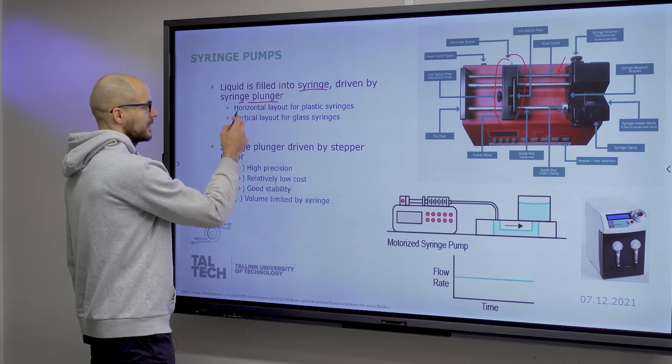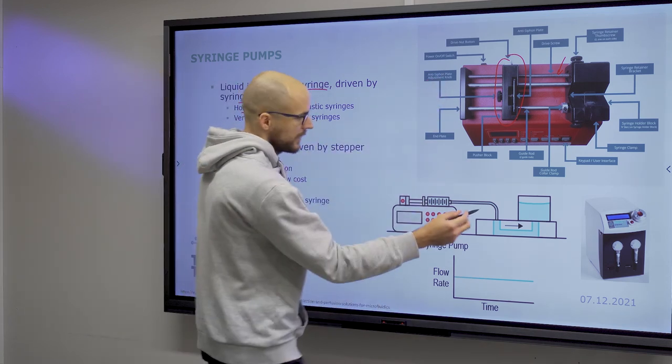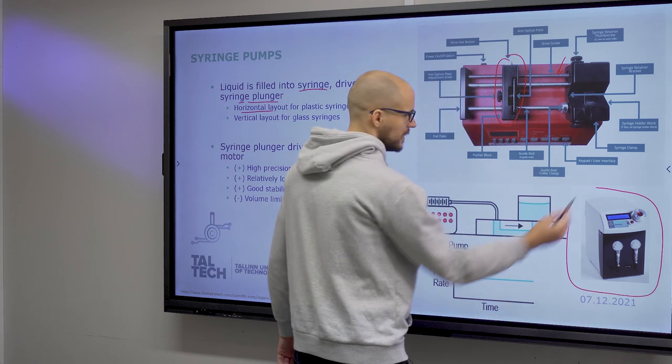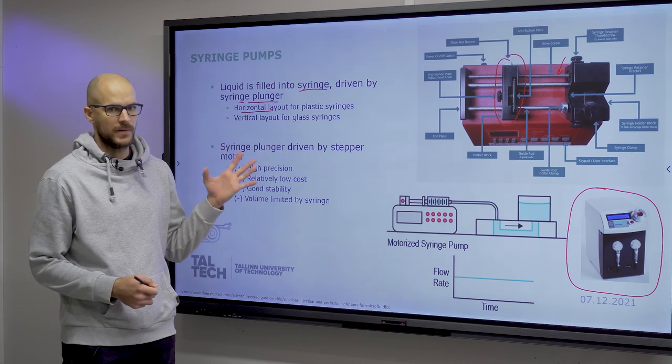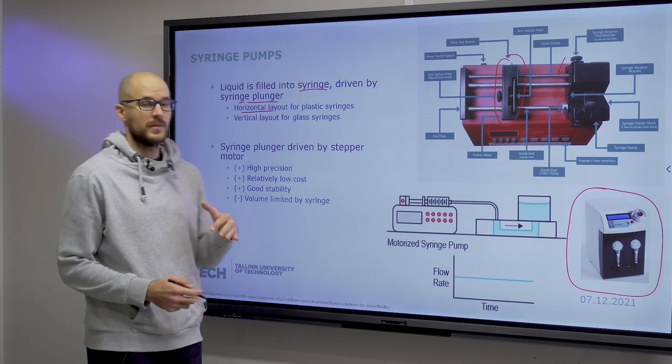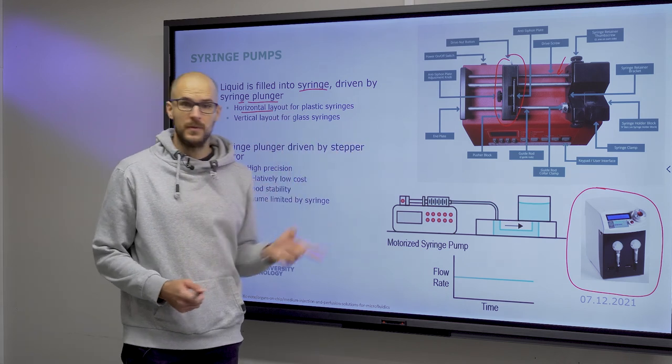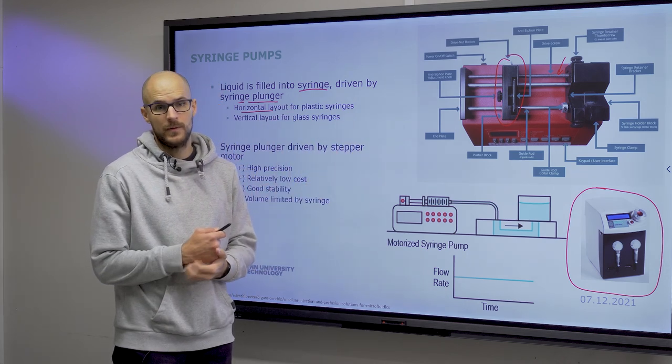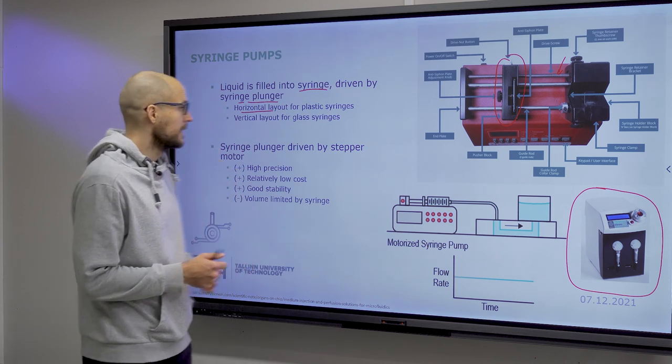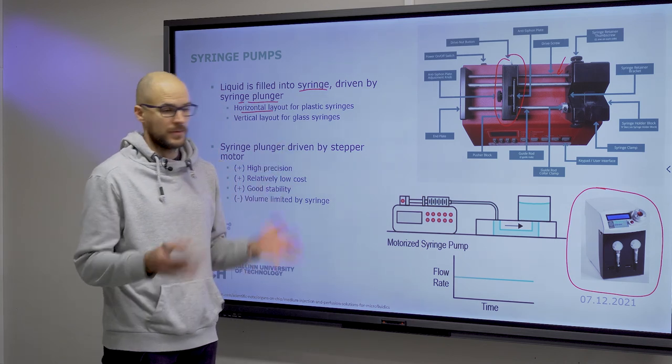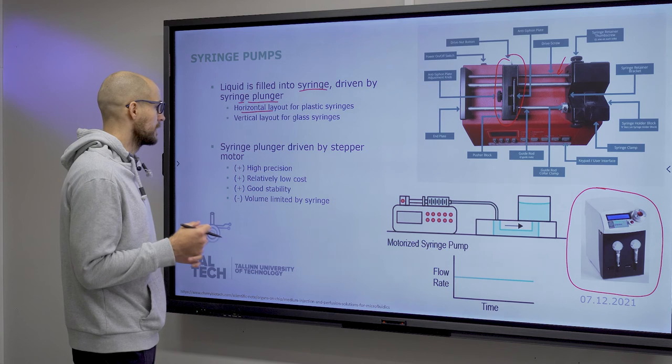For plastic syringes, most typical would be a horizontal layout like you see above. For glass syringes, typical would be a vertical layout where the glass syringes act like pistons, and precision is somewhat better. However, you can also use glass syringes with the infusion pump layout, for instance Hamilton glass syringes. That is a more precise setup, because for plastic syringes there is always the matter of flexibility of the plastic that will take down from the precision.